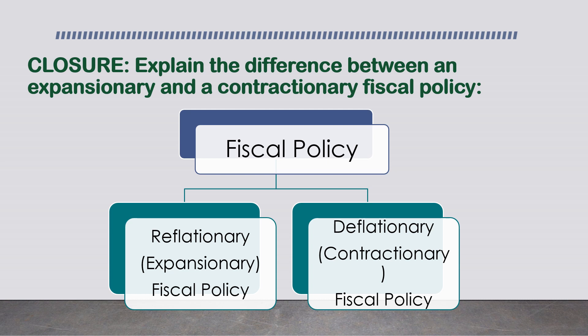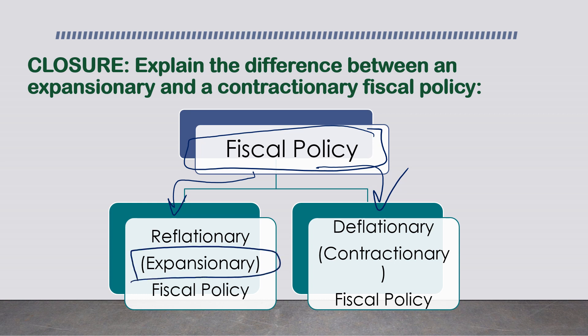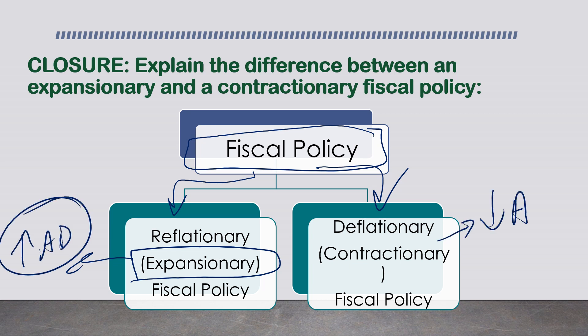As a summary for the lesson: fiscal policy can be either expansionary - which increases aggregate demand - or contractionary, which decreases aggregate demand. Thank you, don't forget to like, share, and subscribe. Have a lovely day.